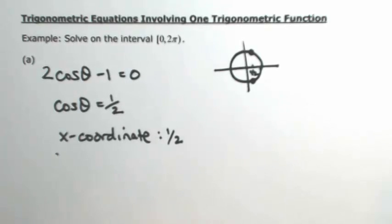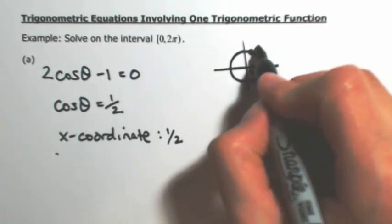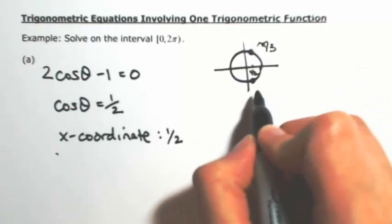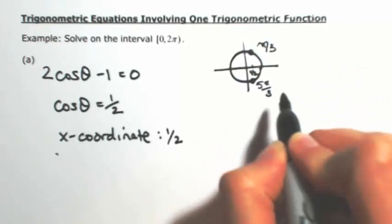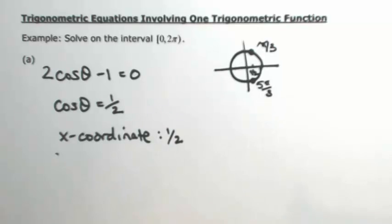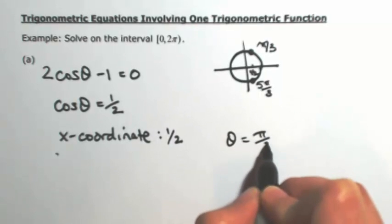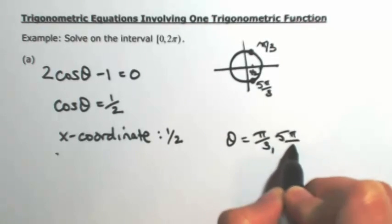Thinking about these angles in radians, because this is 0 to 2π, this would be π/3 and 5π/3. So we actually end up with two answers: theta is π/3 or 5π/3.